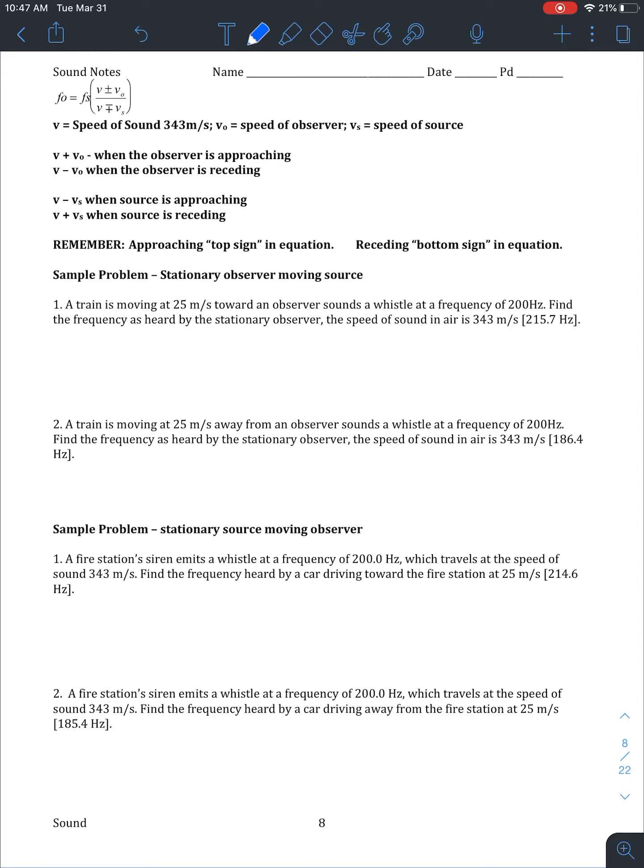So first off, we have our equation for the Doppler effect. Really it's comparing relative velocities. So is the observer encountering more waves per time, meaning a higher frequency or a higher note? Or is the rate at which he or she is hearing the waves decreasing? So it's going to be that lower frequency or lower note.